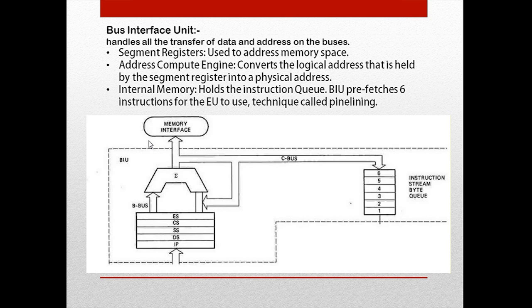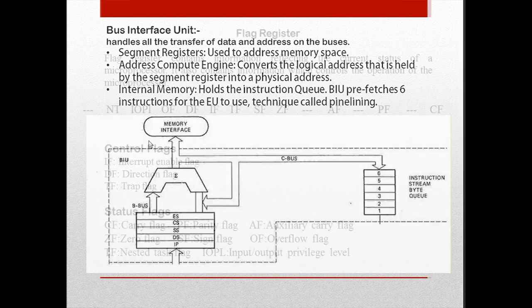The Bus Interface Unit handles all the transfer of data and addresses on the buses. It includes segment registers used to address memory space, an address compute engine that converts the logical address held by the segment register into a physical address, and internal memory that holds the instruction queue. The BIU prefetches six instructions for the Execution Unit to use, using a technique called pipelining.